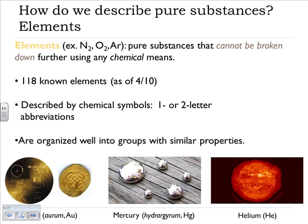So the first thing we'll talk about is describing pure substances, and pure substances are what we call elements. They cannot be broken down any further using any chemical means. There are 118 known elements as of April the 10th, and April of 2010, and still as of today. You can describe elements using chemical symbols, and all those are are one or two letter abbreviations.